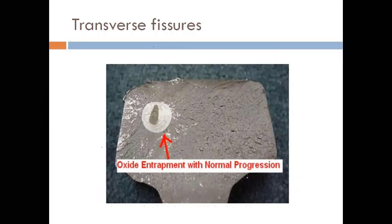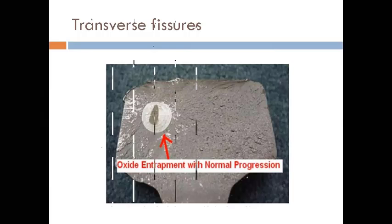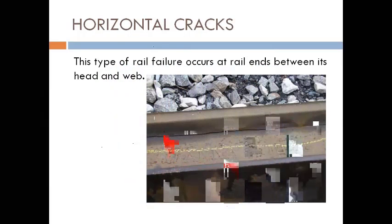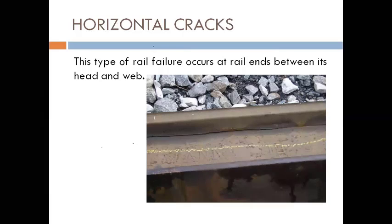Transverse fissures are caused by oxide entrapment during manufacture — there may be air traps or mixing of other metals. These are defects caused by the internal chemical composition of the material, not by weathering agencies. In contrast, split webs and crushed heads are caused by weathering agencies or by wear and tear of the rails.